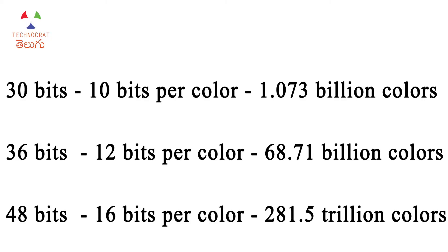You can use the image of 24-bit depth for images and videos. For 32-bit depth, we add 8 bits of alpha channel for transparency on top of the 24-bit depth. For 30-bit depth, we have 10 bits per channel, giving us 1.073 billion colors.